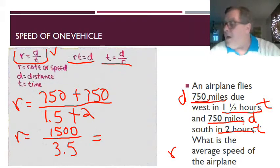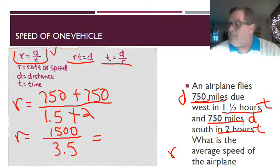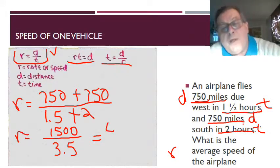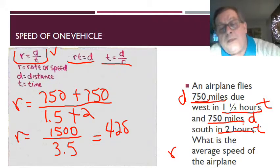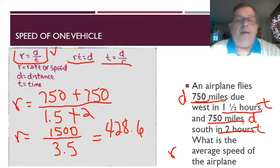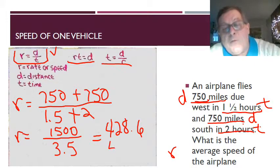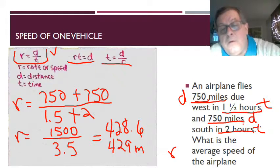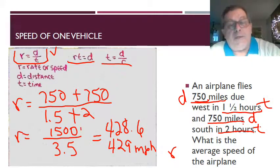And when I just simply divide 1500 by this three and a half hours, I get an answer of 428.6. And depending on how the problem asked me, it said what is the average speed of the airplane. It didn't tell me the number of digits or decimal points that I could use, so I could just actually round this up and I think I will.